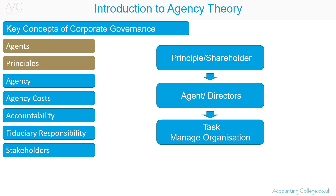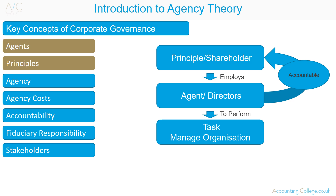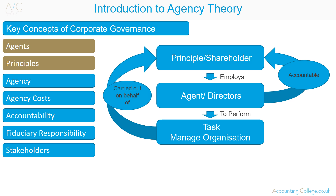Agents and principals. An agent is employed by a principal to carry out a task on their behalf. An agency relationship is one in which a principal engages an agent to perform a service on their behalf. This service involves the principal delegating some decision-making authority to the agent. Agents are accountable to the principal, and the agent performs the necessary tasks on behalf of the principal. Agency refers to the relationship between a principal and an agent.